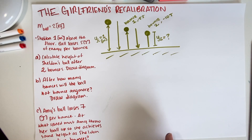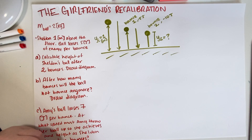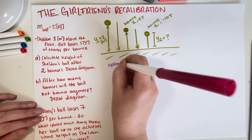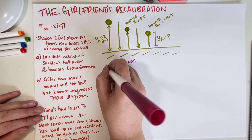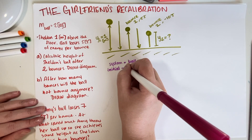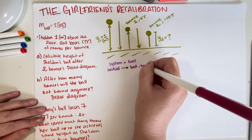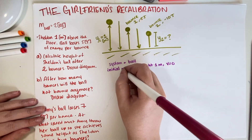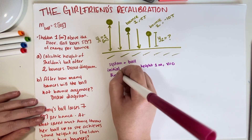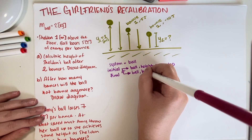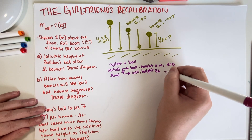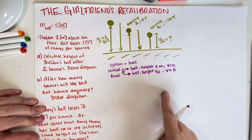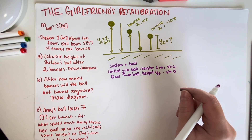Now let's set up an energy interaction diagram. For our energy interaction diagram, the system is the ball. Our initial state is the ball at height 1 meter, velocity equal to 0 because he just releases it. The final state is the ball at an unknown height, which we'll call YF, and velocity is also equal to 0 — because the ball goes up and then stops at the top of each bounce.